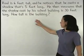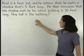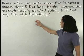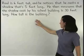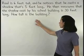Raul is six feet tall and he notices that he casts a shadow that is five feet long. He then measures that the shadow cast by his school building is 30 feet long. How tall is the building?